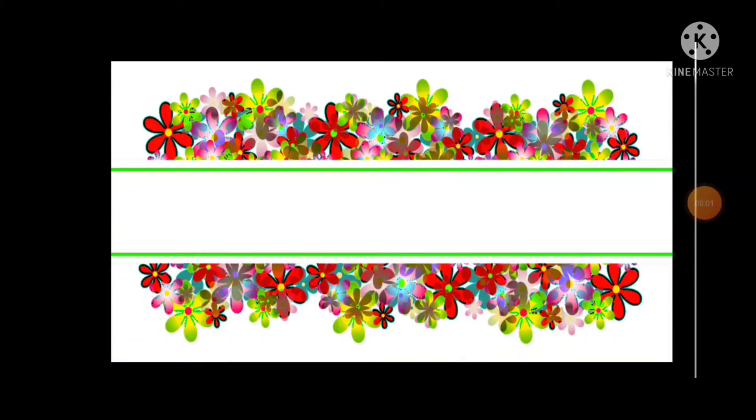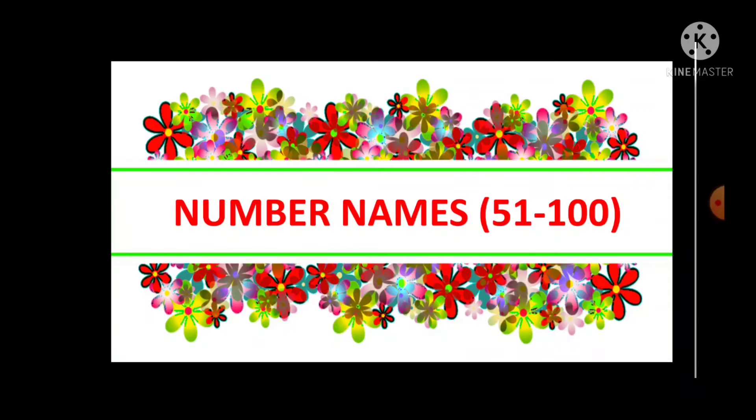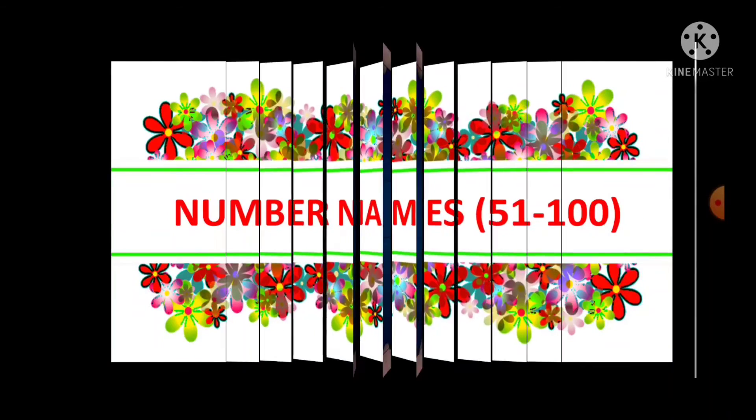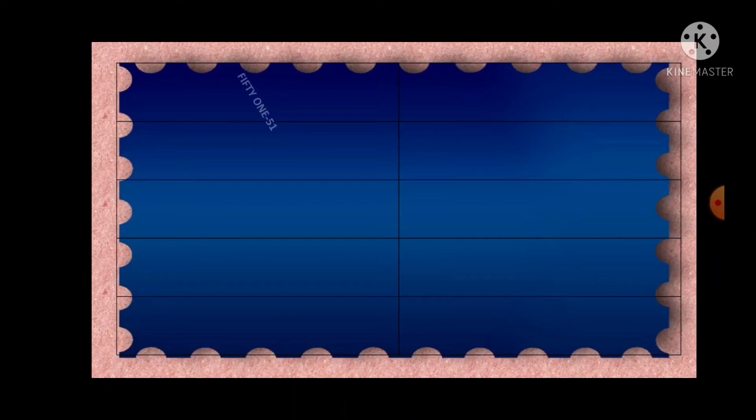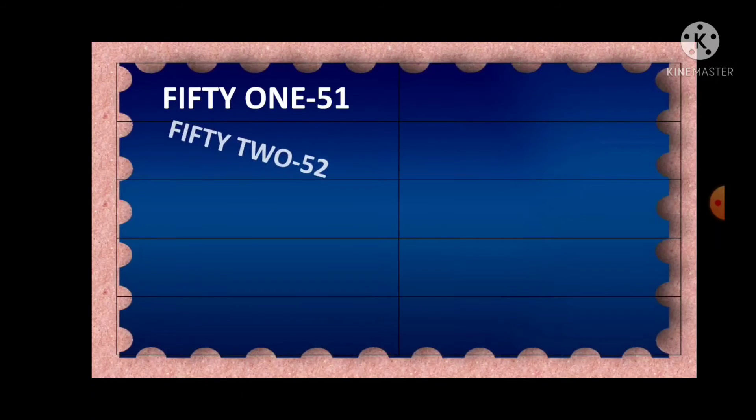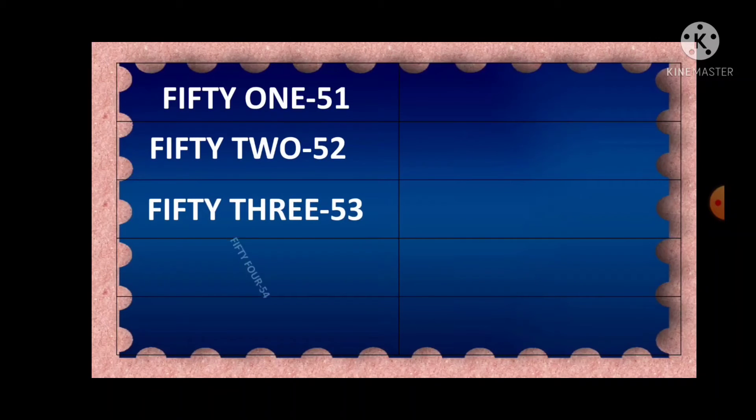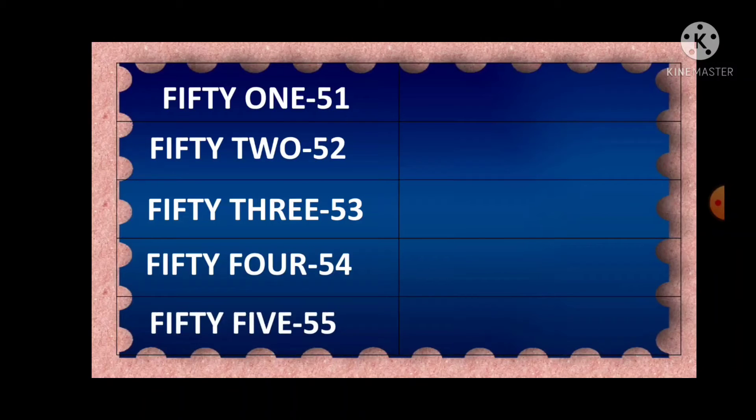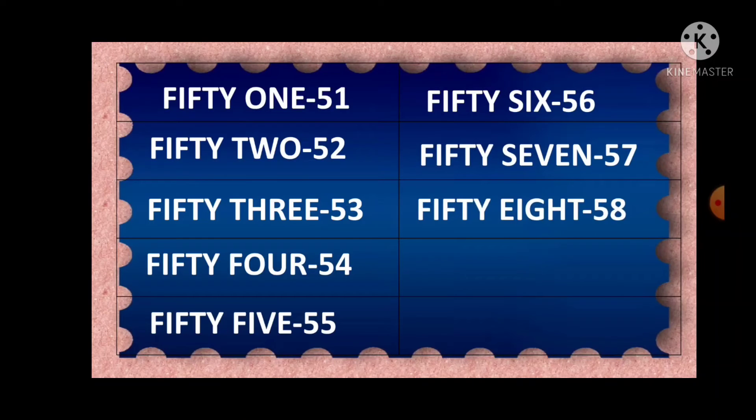Now we have to continue. Number names 51 to 100. Let's start. What is the spelling of 50? F-I-F-T-Y. And one, O-N-E: 52, 53, 54, 55, 56, 57, 58, 59, 60. What is the spelling of 60? Write 6, S-I-X, and just add T-Y, sixty.